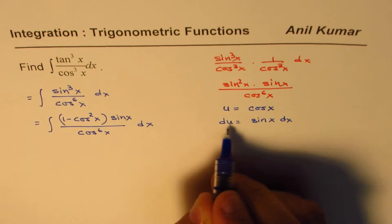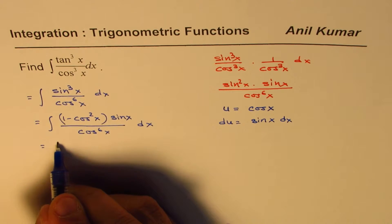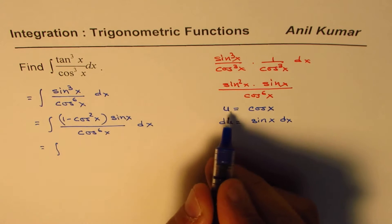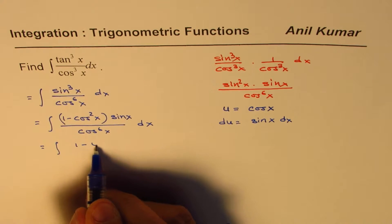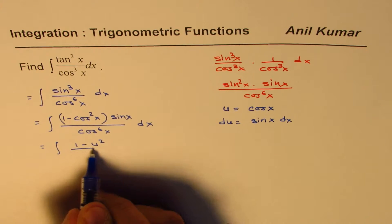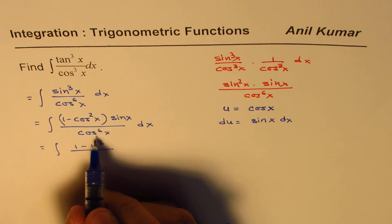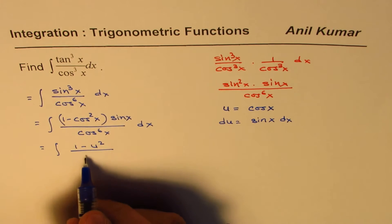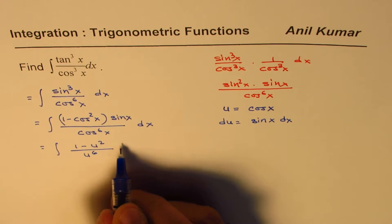So du equals to sine x dx. So sine x dx becomes du, so we could now write this as 1 minus u square over u to the power of 6. And sine x dx is du.